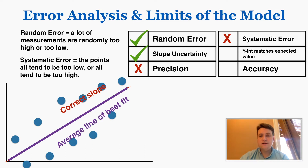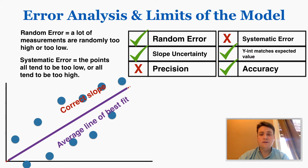Because there's no systematic error, the y-intercept actually does still match the expected value and the slope still does match the expected value. When you take that average, it still comes out to be the same line. So there is accuracy even though there isn't precision. No systematic error means there is a y-intercept and slope that match the expected result and there is accuracy.